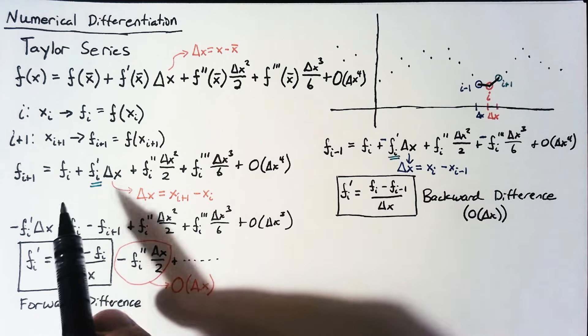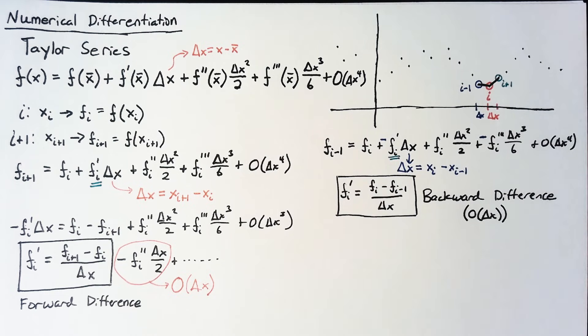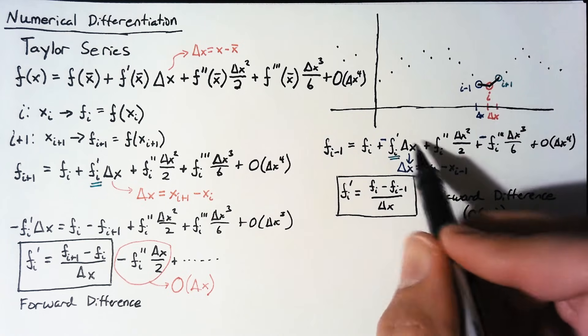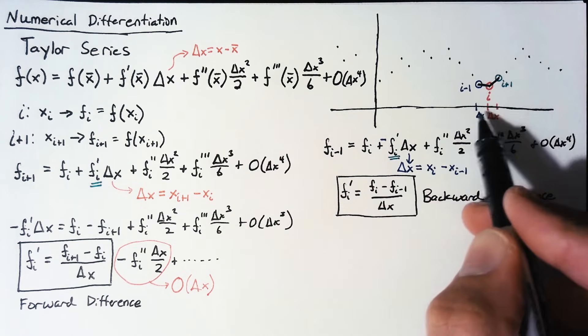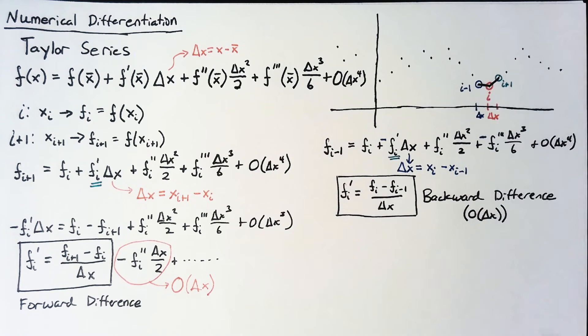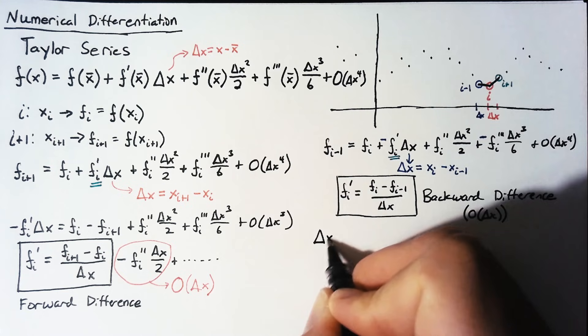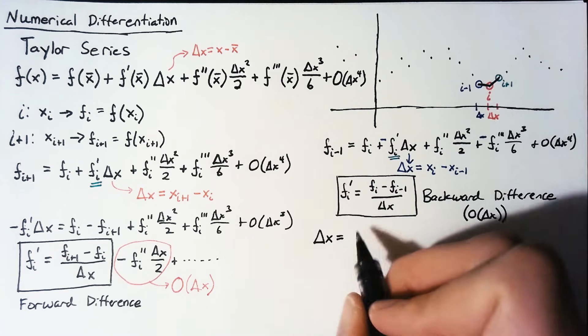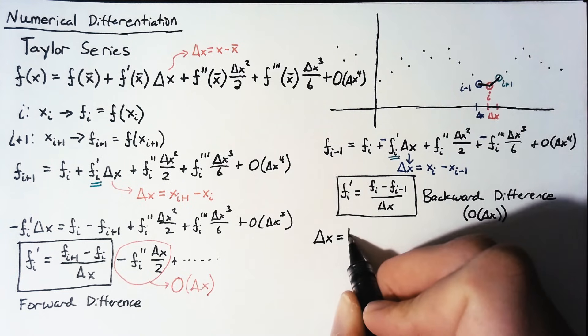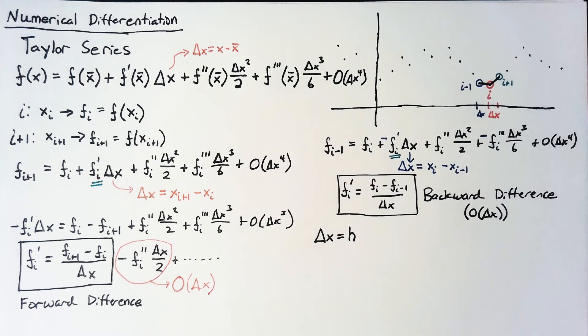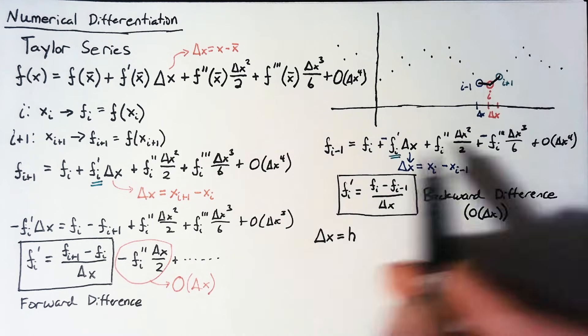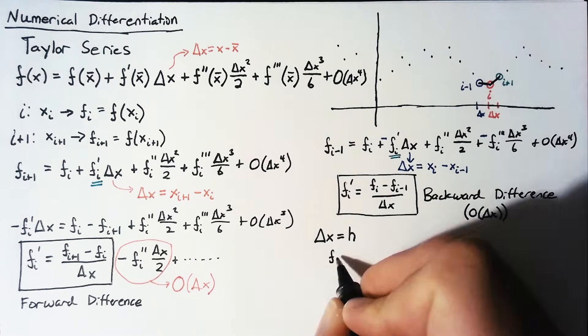The only thing we can do is try to use multiple points and maybe eliminate some of this error. Let's write both of these equations, but we're going to make one small change. And that change is we're going to assume that this delta x is constant between all these points. We have a nice evenly spaced grid of points. And the way that we're going to write that is we're going to say that delta x is equal to constant h. So, I'm going to go ahead and rewrite both of these equations with this small change.